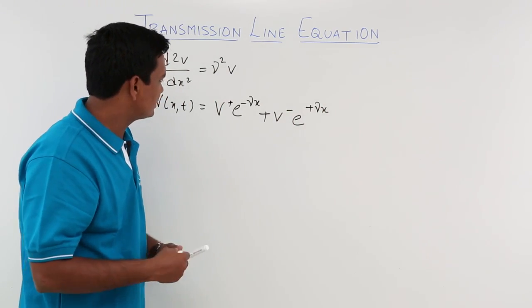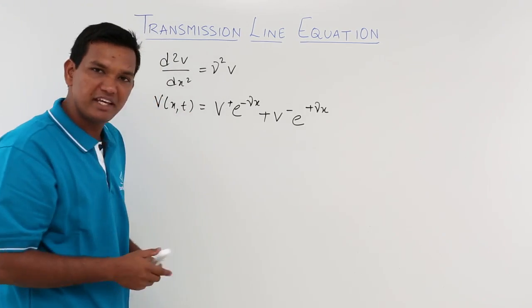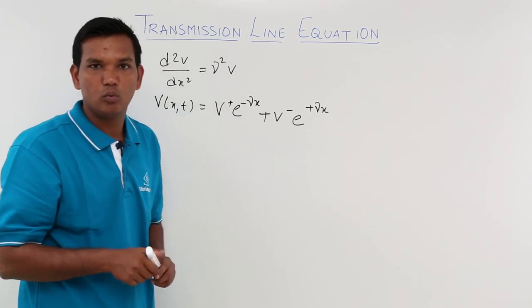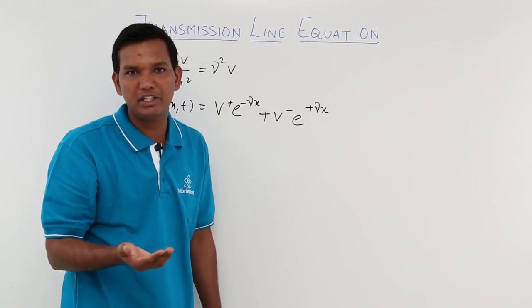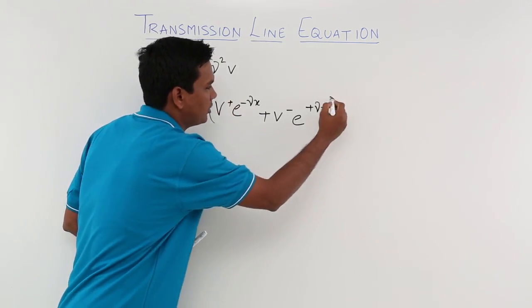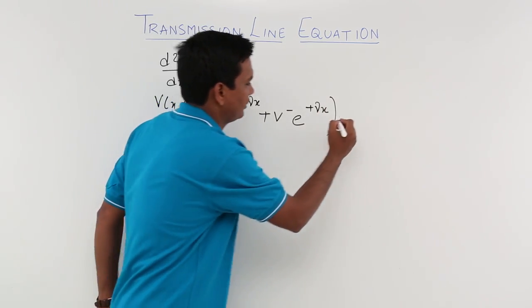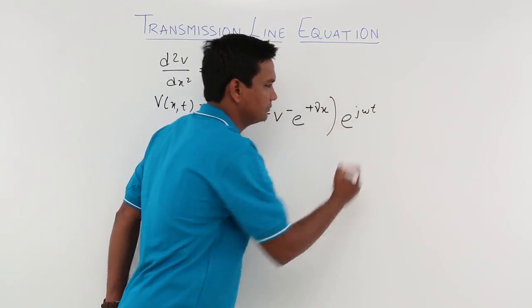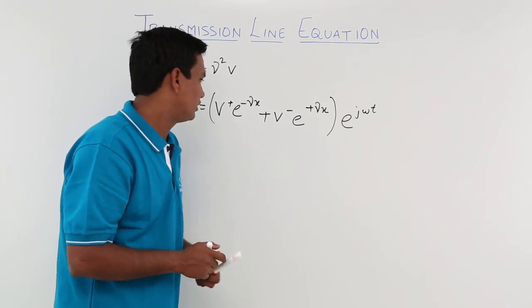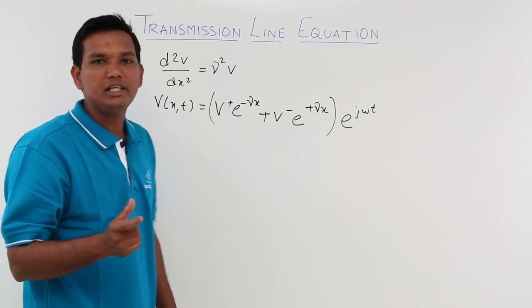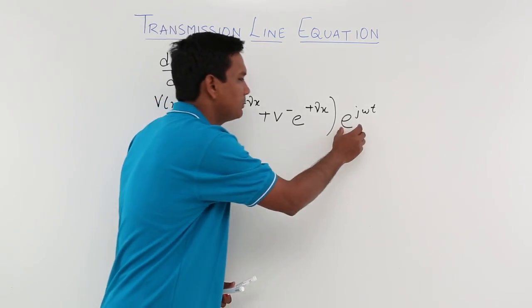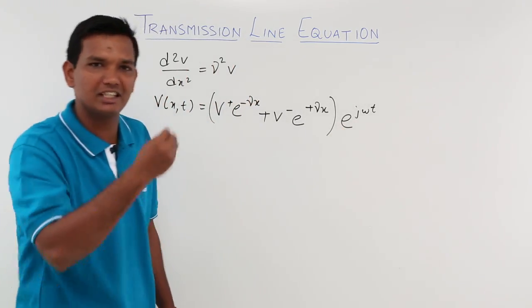This is the voltage in terms of space and time. But if I want the instantaneous value — because the voltage will be sinusoidal in nature — what I need to do is multiply the whole equation by e^(jωt). This will give nothing but the instantaneous value. If you are dealing with only the RMS and peak value, we can use this equation as is; but for instantaneous value we multiply by e^(jωt).